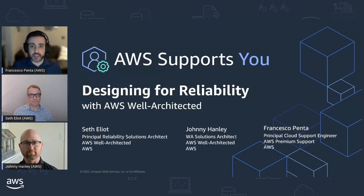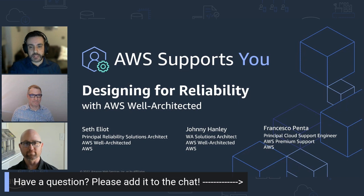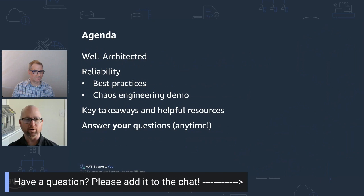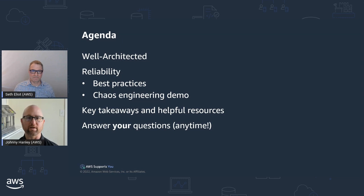Today we will be talking about designing for reliability with the AWS Well-Architected framework. Feel free to use the chat window on the right-hand side to let us know where you're joining us from today and share your thoughts and questions throughout the episode. We look forward to hearing from you. Here's our agenda for today: we're going to start off talking about Well-Architected, then specifically about reliability, dive into best practices, do a chaos engineering demo, and then circle back and talk about key takeaways and helpful resources. Please put your questions into the chat and we'll pause from time to time to answer them.